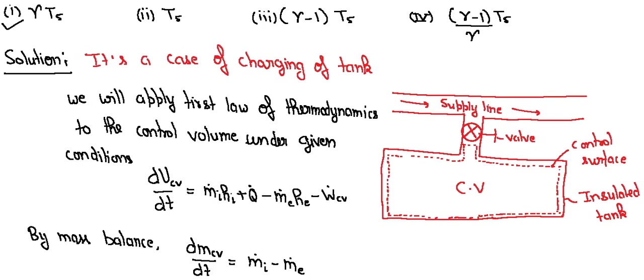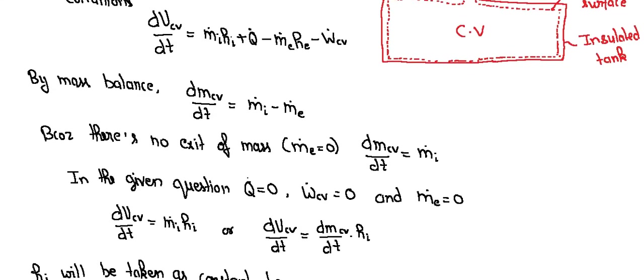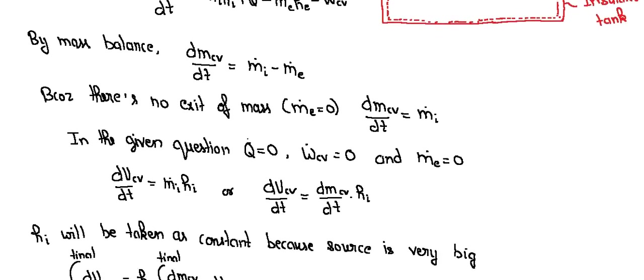By mass balance, dmcv/dt equals mi minus me. In case of change in kinetic and potential energy as neglected, the control volume work Wcv equals zero.